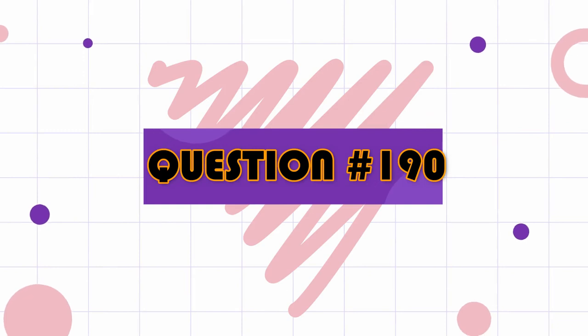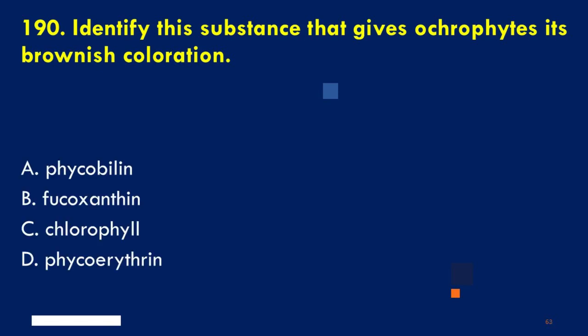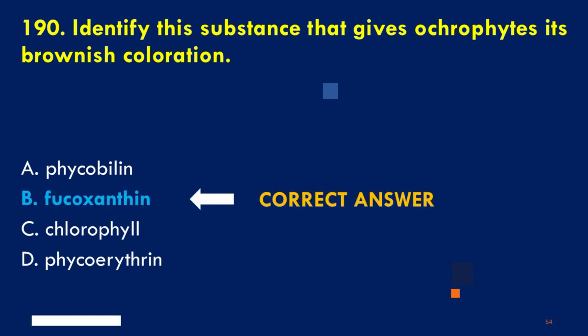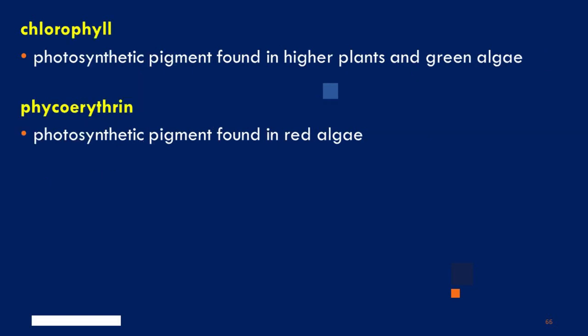For our last question: identify the substance that gives brown algae its brownish coloration. A. Phycobilin, B. Fucoxanthin, C. Chlorophyll, D. Phycoerythrin. The correct answer is B. Fucoxanthin. Fucoxanthin is a major carotenoid found in the chloroplasts of brown seaweeds and diatoms. It makes a complex with chlorophyll protein and plays an important role in light harvesting and photoprotection. Phycobilin is a photosynthetic pigment found in red algae and cyanobacteria. Chlorophyll is a photosynthetic pigment found in higher plants and green algae. Phycoerythrin is a photosynthetic pigment found in red algae.